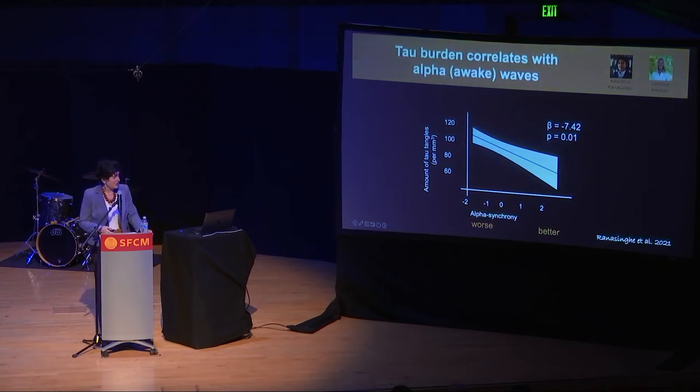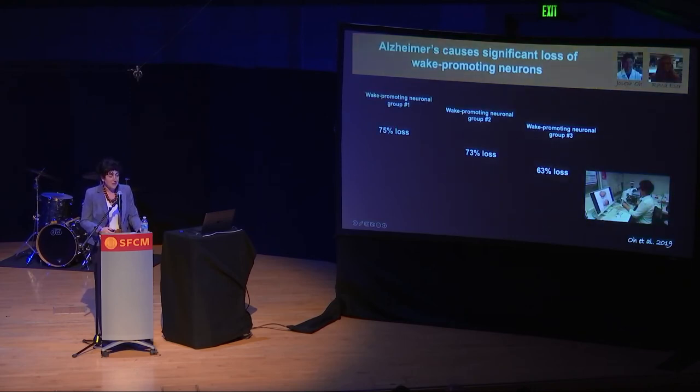One of the first studies we did to try to understand this was together with Camalini. What we did was to look at the data of our research participants that did EEG to measure the sleep when they came to our clinics and donate our brains. And then, we could realize that the worse of the alpha synchrony, the worse their waves during awake looked like, the more tau they had in the brain. So, we were so excited by this result that we decided to really do the very complicated work that took many years of looking at many brains. We counted neurons in these very small areas that promote awake. And what we concluded is that if we look at any one of these areas, at least two-thirds of these neurons die during Alzheimer's disease.